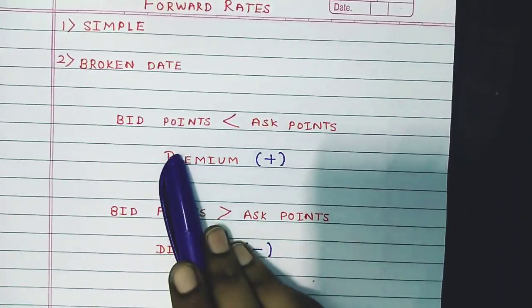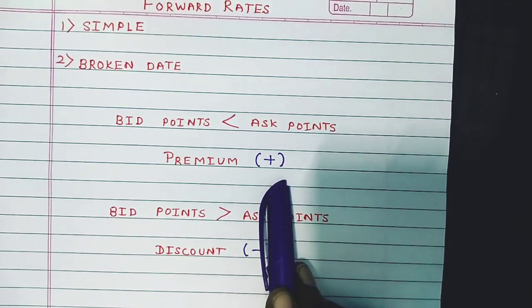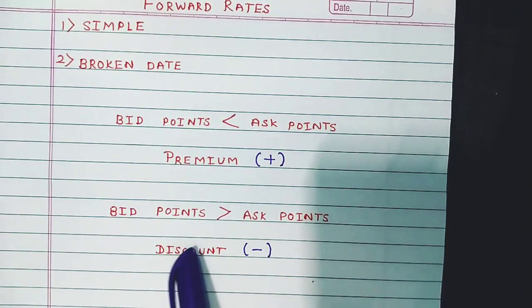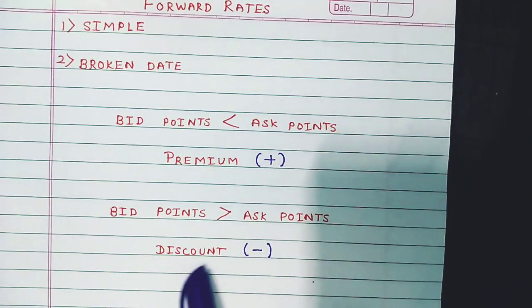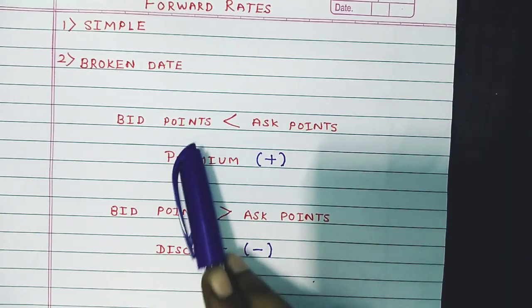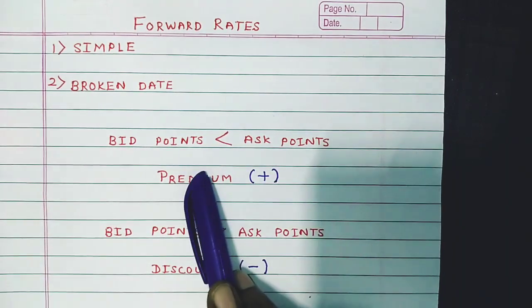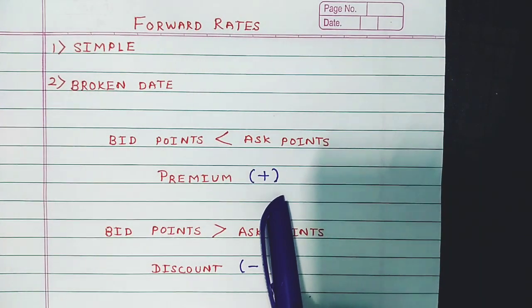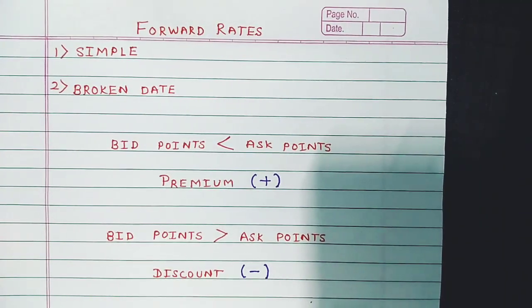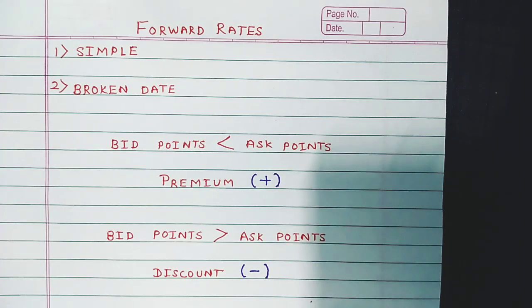To summarize: if the bid points are lower compared to the ask points, the currency is available at a premium and we add those points. If the bid points are higher compared to the ask points, the currency is at a discount and we subtract those points. Always divide the bid and ask points given in the question by 10,000. I hope that scoring good marks in CA/ICAI finance is easy now. Thank you for watching this lecture.